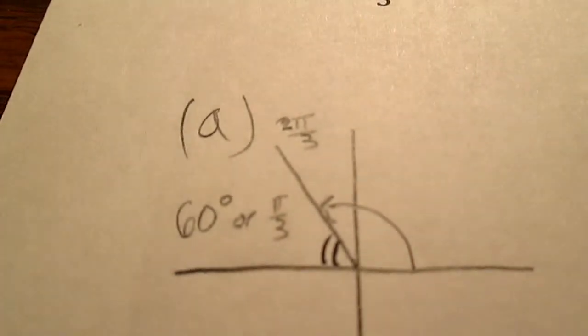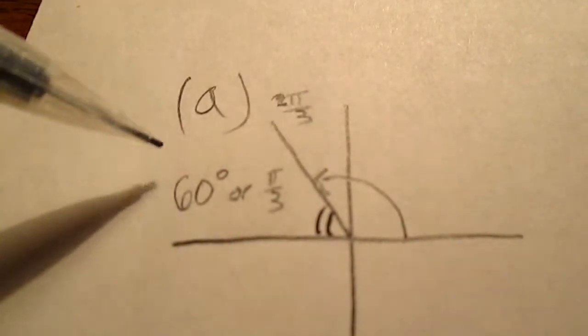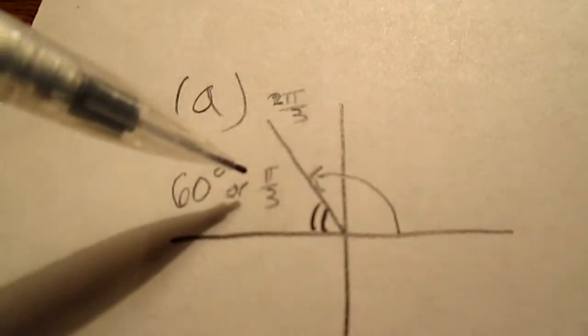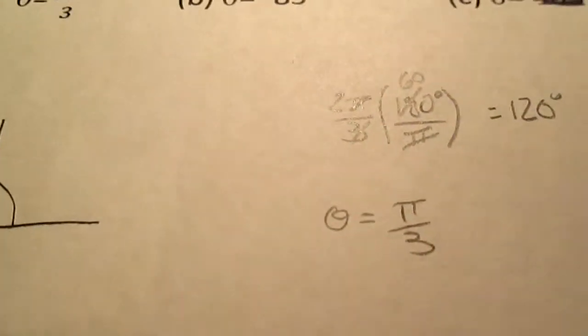So 2π over 3 is at 120 degrees, the reference angle is 60 degrees, but since it gave it to you in radians, give it back in radians, which is π over 3. So reference angle would be π over 3.